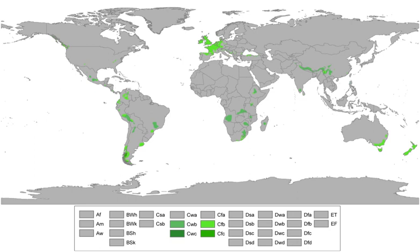Despite the oceanic-like thermal regimes, these areas are generally classified as steppe or desert climates. These arid versions of oceanic climates are found in eastern Washington and Oregon to the east of the Cascade Range in the United States, in the Okanagan Valley in British Columbia in Canada, Patagonia in southern Argentina, and the Atacama Desert in northern Chile.